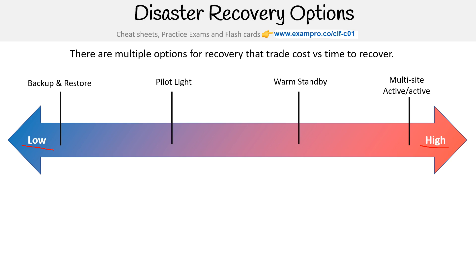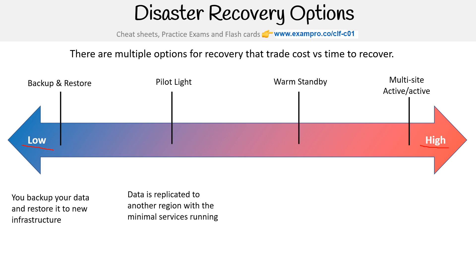Let's walk through what each of these things conceptually does in terms of architecture. When you're doing backup and restore, you basically back up your data, and at the time of disaster recovery you restore it to new infrastructure. For a pilot light, the data is replicated to another region with minimal services running to keep replicating that data, so you might have some core services running. A warm standby is a scaled-down copy of your infrastructure — you have everything you'd absolutely need to run the application, but it's not at scale, so at the time of an incident you scale up to the capacity you need.